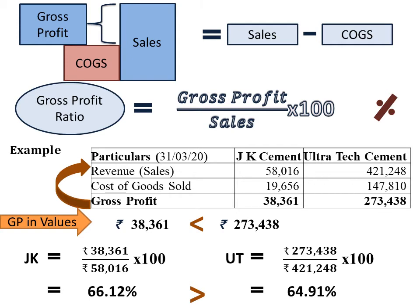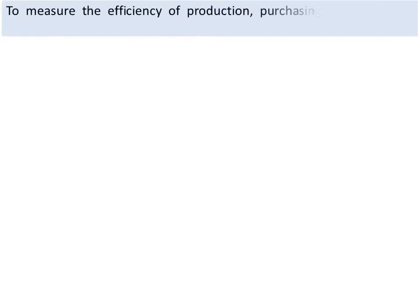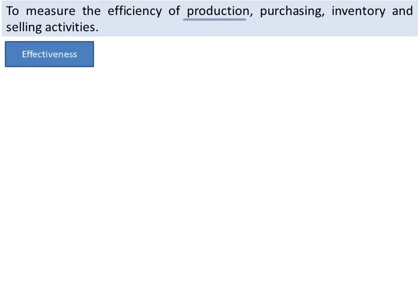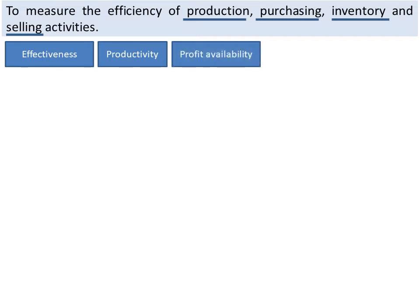Let us understand the objective and interpretation of this ratio. The objective is to measure the efficiency of production, purchasing, inventory, and selling activities. This ratio helps in measuring the effectiveness of production management, purchase management, inventory management, and sales management. It also helps in measuring productivity of the firm and helps in knowing profit availability to meet other expenses. There is no standard set for this ratio; however, it must be adequate to cover its indirect and non-operating expenses.